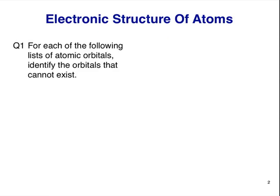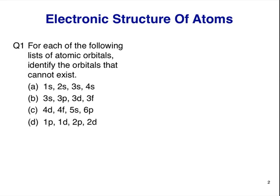Here's the first question. For each of the following lists of atomic orbitals, identify the orbitals that cannot exist. (a) 1s, 2s, 3s, 4s. (b) 3s, 3p, 3d, 3f. (c) 4d, 4f, 5s, 6p. (d) 1p, 1d, 2p, 2d.